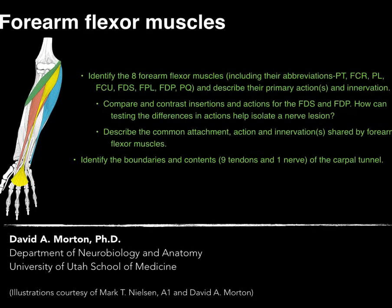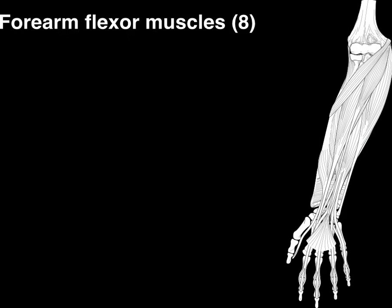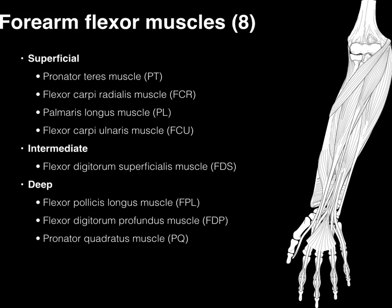We're going to talk about forearm flexor muscles. We'll look at these eight forearm flexor muscles, their actions and innervations, and end up by talking about the carpal tunnel. There are eight forearm flexor muscles divided into superficial, intermediate, and deep groups: four superficial, one intermediate, and three deep muscles.